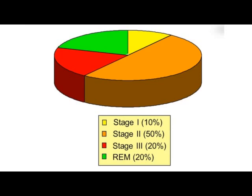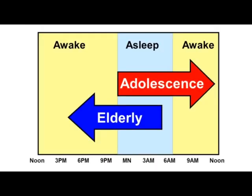Adults spend approximately 20% of time in REM sleep, approximately 50% in stage two non-REM, 10% in stage one non-REM, and 20% in stage three non-REM, which is the deepest stage. There are developmental changes: adolescents tend to go to sleep later and wake up later, while older adults may go to sleep as early as 8 o'clock but be awake at 4 in the morning. This is a developmental pattern.